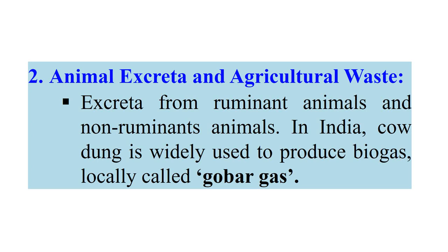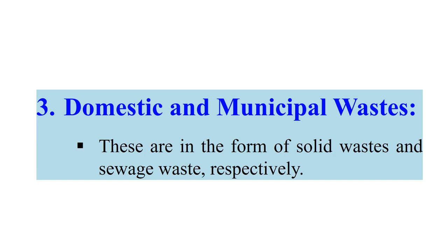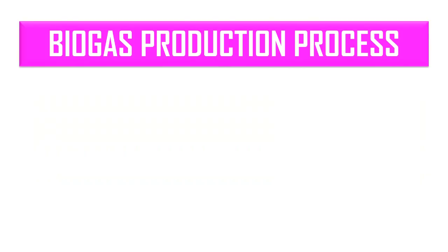The second source is animal excreta and agricultural waste — solid waste rich in cellulose and lignocellulose, and excreta of ruminant animals. In India, cow dung is widely used to produce biogas, which is locally called gobar gas. The third source is domestic and municipal waste from various households, which can also be used for biogas production.